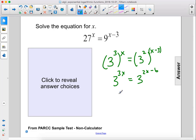So we can set the exponents equal to each other. We get 3x equals 2x minus 6, or x equals negative 6.